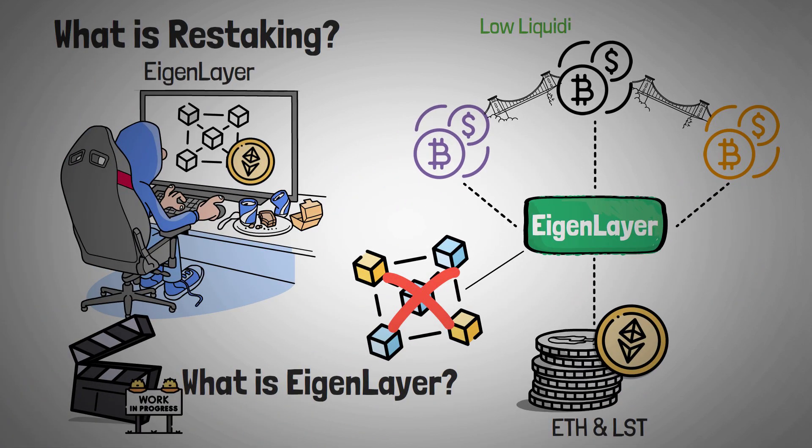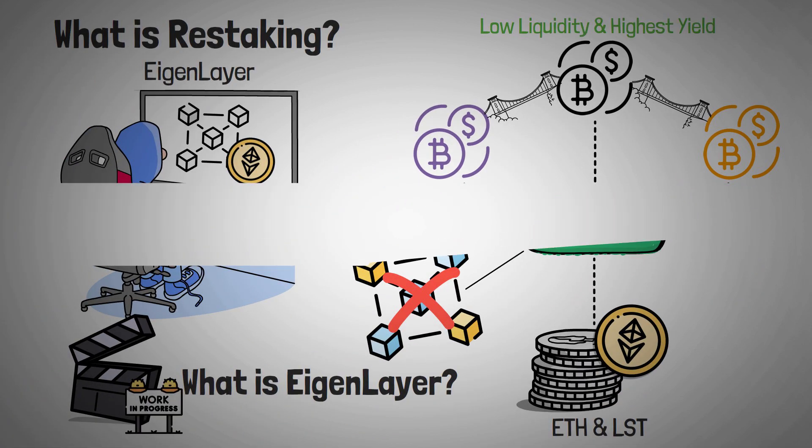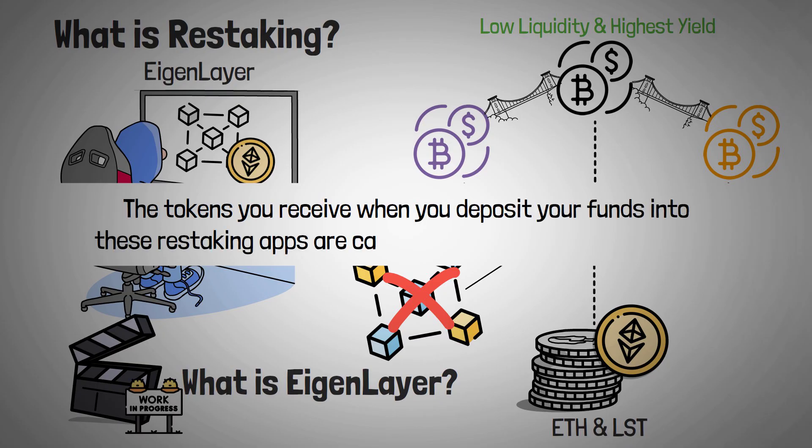Usually, newer networks with low liquidity have the highest yield. The tokens you receive when you deposit your funds into these restaking apps are, unsurprisingly, called liquid restaking tokens, or LRTs.